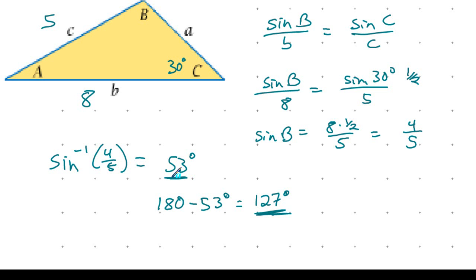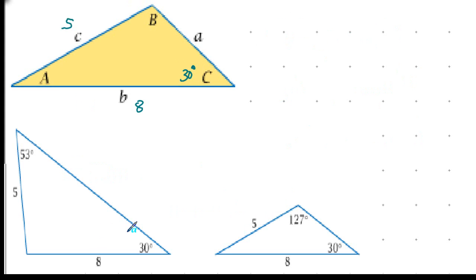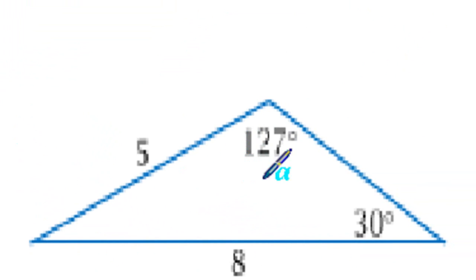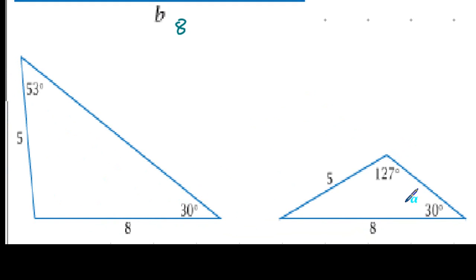To illustrate, these are the two possibilities. The triangle on the left has angle B of 53 degrees, making the remaining angle 97 degrees. The triangle on the right has angle B of 127 degrees, making the remaining angle 23 degrees. Both are valid solutions that each add up to 180 degrees; additional information would determine which triangle we're actually dealing with.